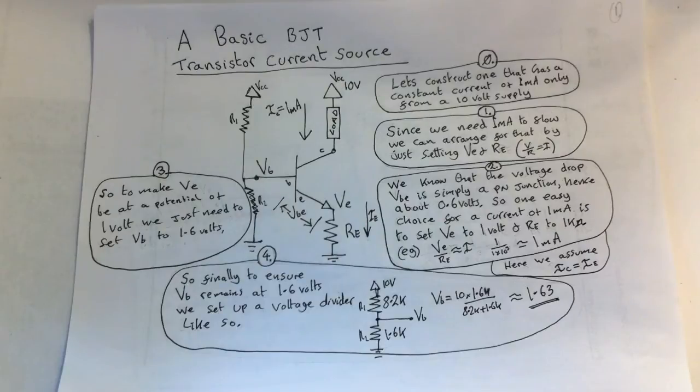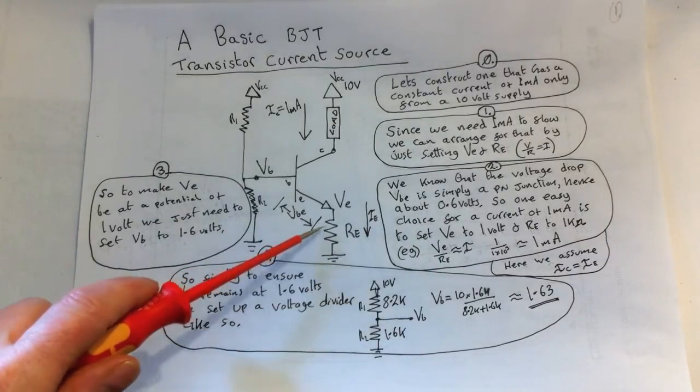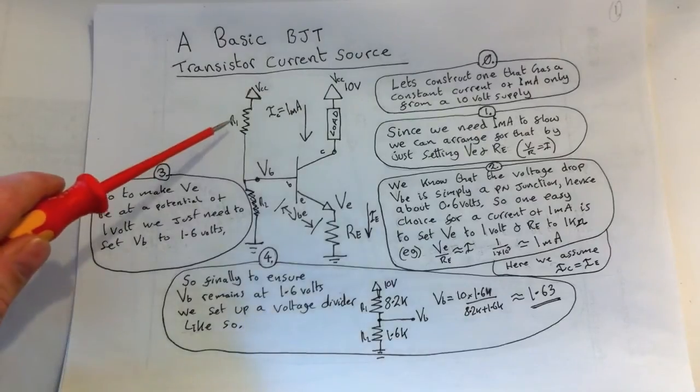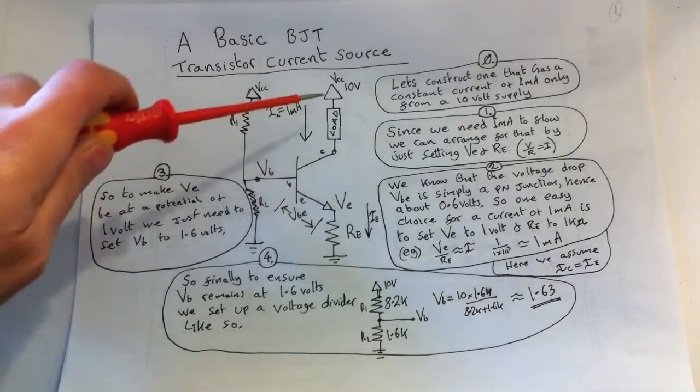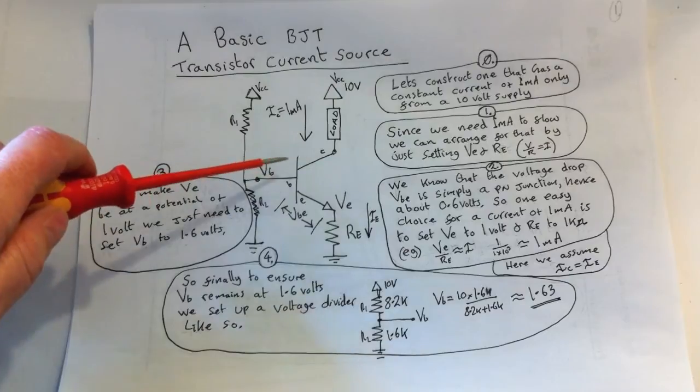Since we need one milliamp to flow, we can arrange for that by just setting VE, which is the emitter voltage, and RE, the emitter resistor. This is RE, the emitter resistor, we have the transistor here and the load. What we need to do here is set this current to one milliamp.